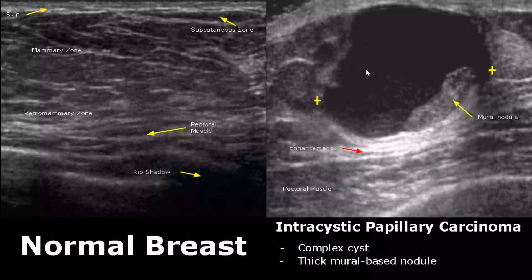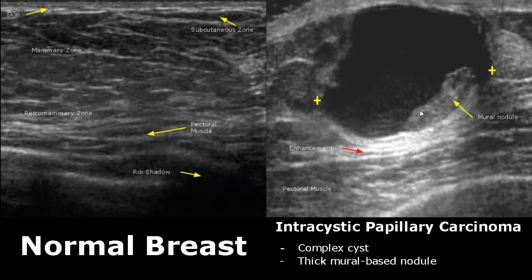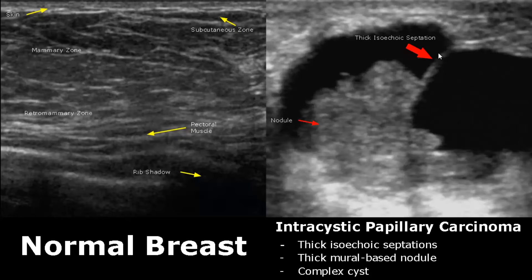Intracystic papillary carcinoma consists of a complex cyst with a thick mural-based nodule. This nodule will be attached to the wall and will not move around. Here we have another image of intracystic papillary carcinoma.